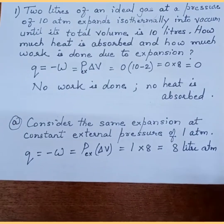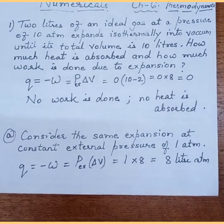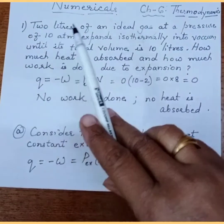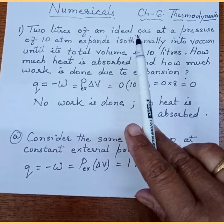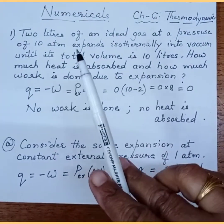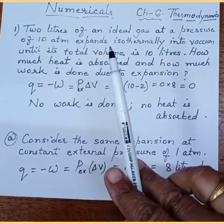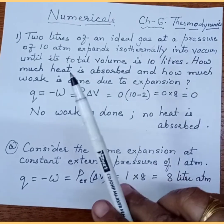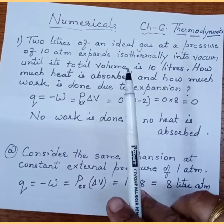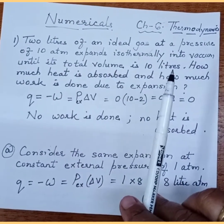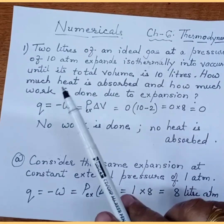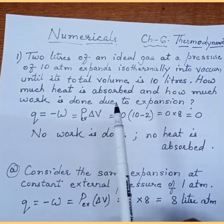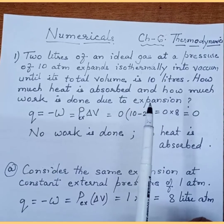Let us discuss some numericals of Chapter 6, Thermodynamics. 2 liters of an ideal gas at a pressure of 10 atmosphere expands isothermally into vacuum until its total volume is 10 liters. How much heat is absorbed and how much work is done due to expansion?